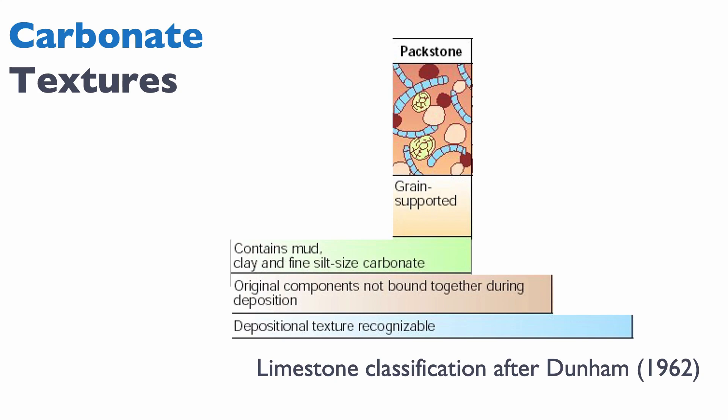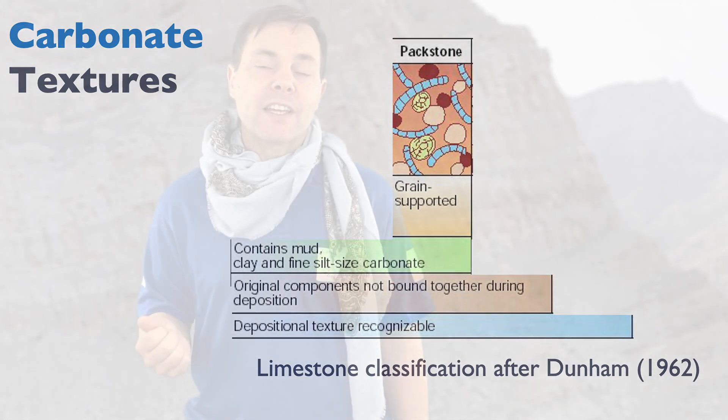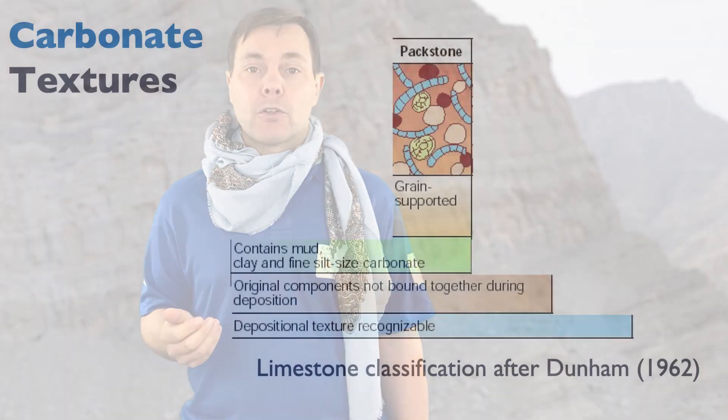Now, if you have a rock that contains mud but is grain supported — so the grains are touching — then we call this a packstone. This is an important distinction: it means that the framework of the texture is made by the grains supporting each other. So that's a packstone, and here's an example of a packstone.